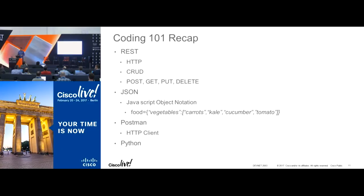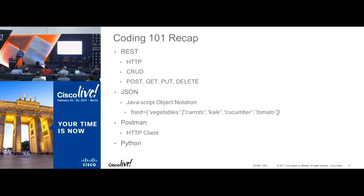You can also use Postman, an HTTP client where you just enter things and run it — it's not coding, but it's a way to get your feet wet. Postman is not the only HTTP client, but we like it because it's simple. We're using Python because it's the en vogue language — not as big as Java, but a lot easier to get started with. If you're a network engineer who wants to use development, Python is the way to go: no pointers, you don't have to worry so much about objects, it's easy to get started.